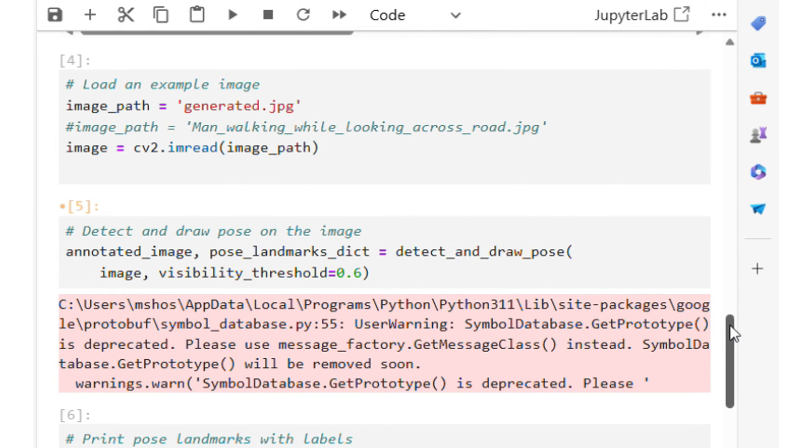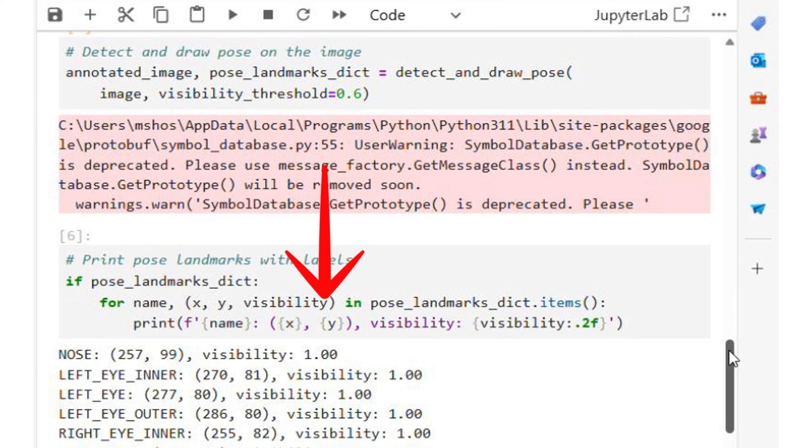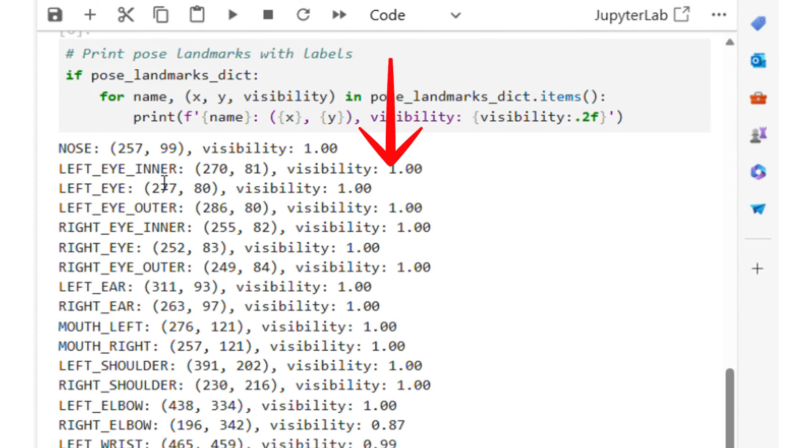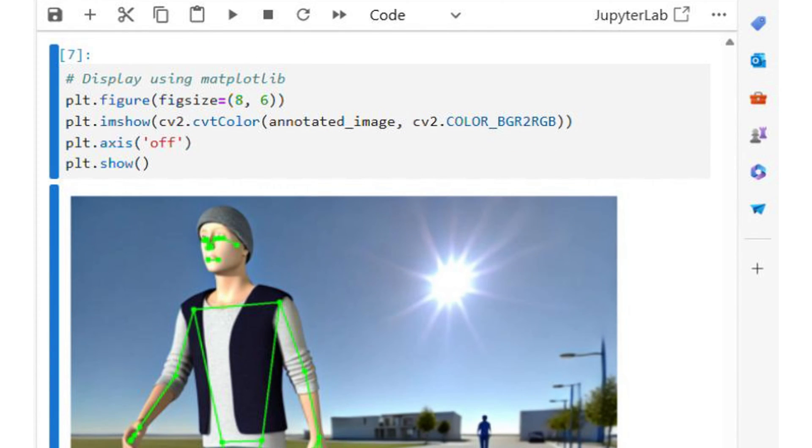Let's print the detected landmarks along with their coordinates and visibility scores. So these x and y values are the points in the pixel coordinate system based on the image width and height. Also, the visibility score is provided for each point.